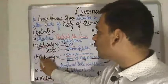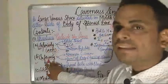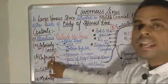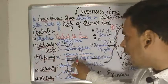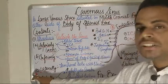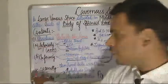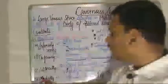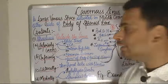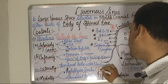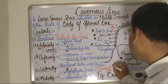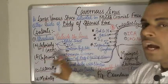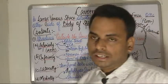The structures lying inferiorly outside the sinus are the foramen lacerum and the junction of the body and the greater wing of the sphenoid. Laterally, the temporal lobe with uncus lies adjacent to the cavernous sinus. Medially, the hypophysis cerebri — that is the pituitary gland — and the sphenoidal air sinus are present.